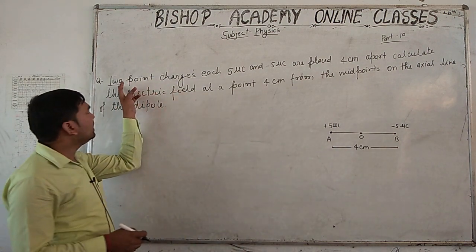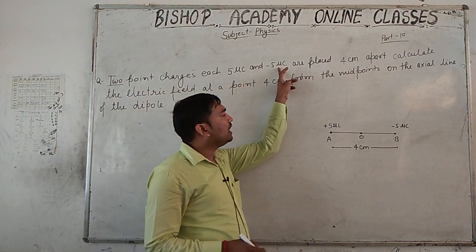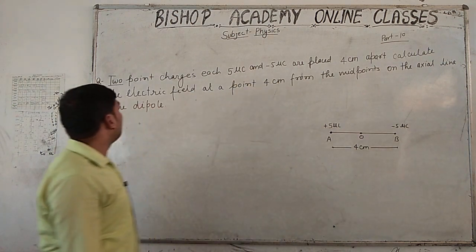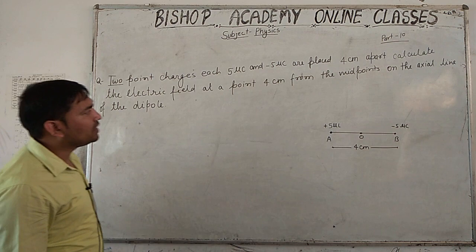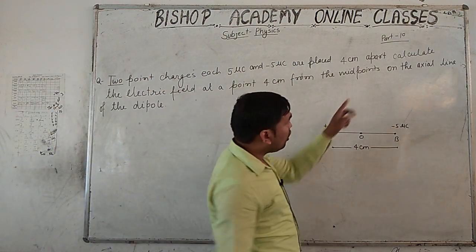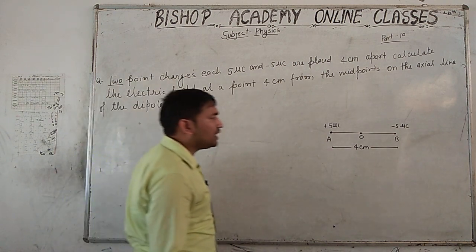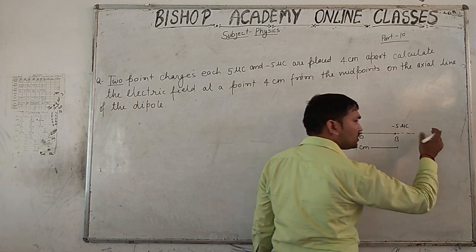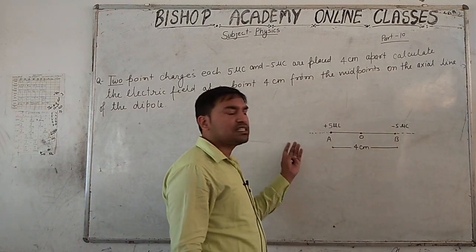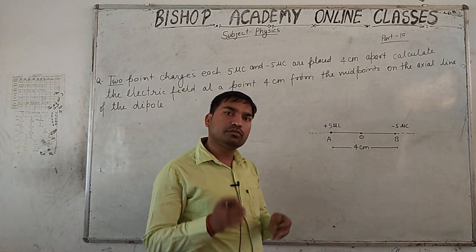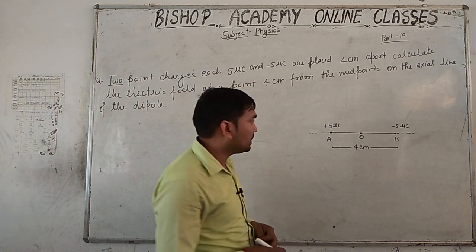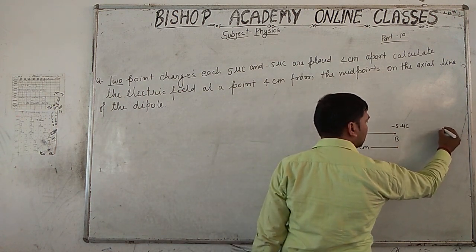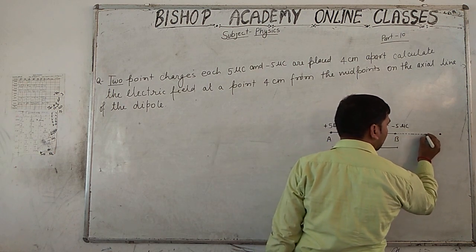Calculate the electric field at a point 4 cm from the midpoint on the axial line of the dipole. The axial line can extend on either side — the question does not specify which side, so we are free to choose either direction. Let us suppose point P is on the axial line on one side, where we need to find the electric field.